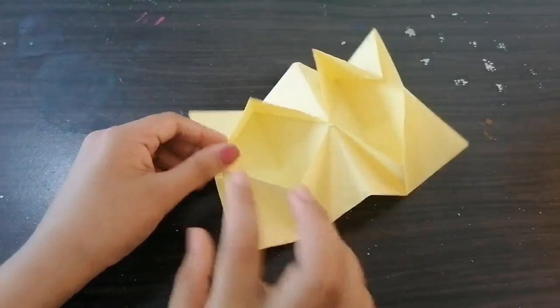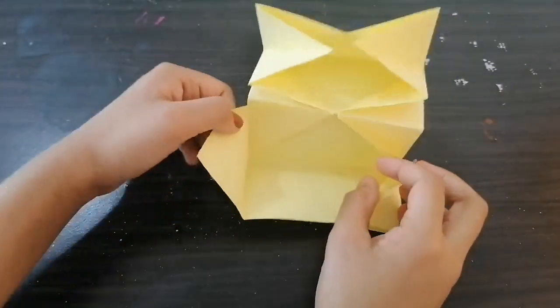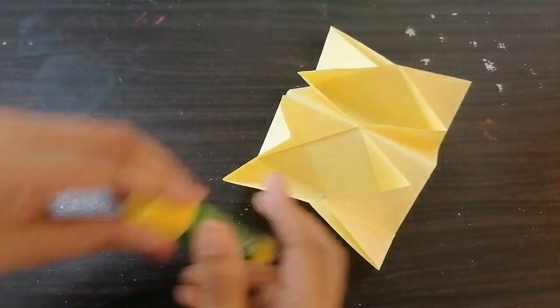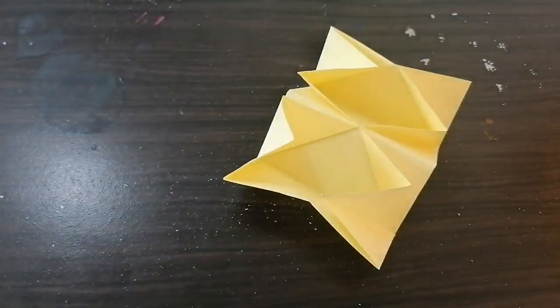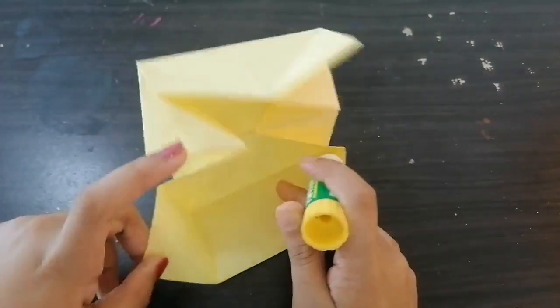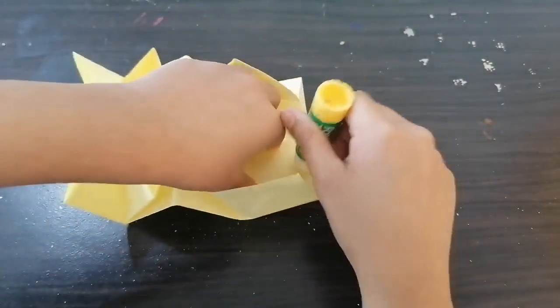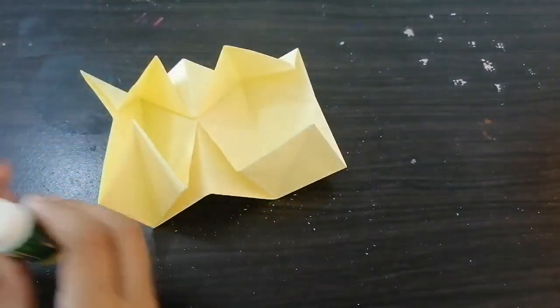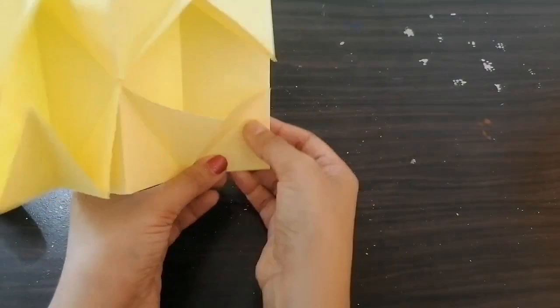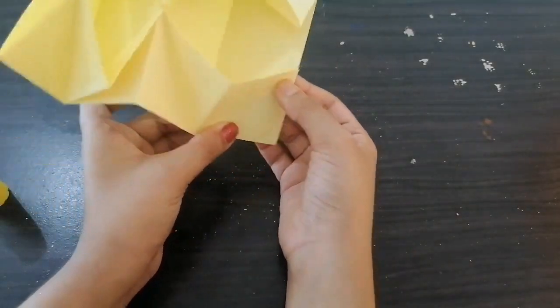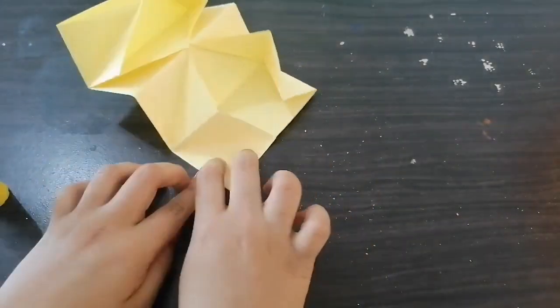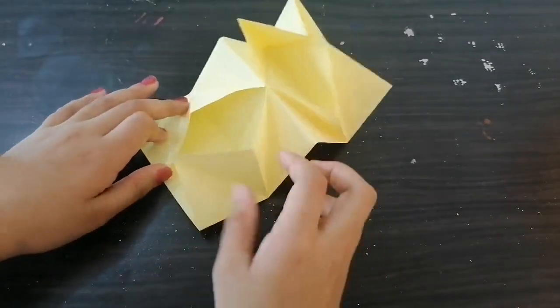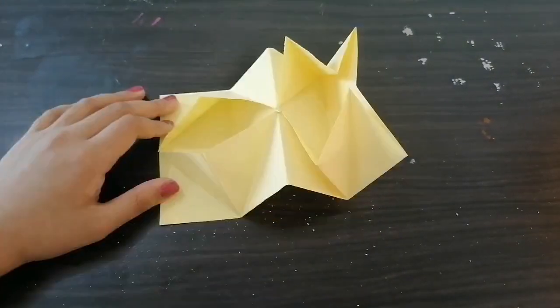We need to glue this part. Open it like this, take the glue, and put it on this part. Now stick this - stick only this triangle.